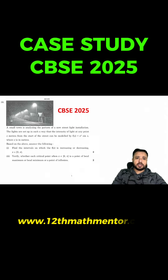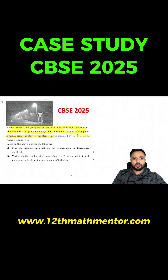Application of derivatives case study, CBSE 2025 Class 12. In this question, a small town is analyzing the pattern of a new street light installation. The lights are set up such that the intensity of light at any point x meters away from the start of the street can be modeled by f(x) = eˣ sin x, where x is in meters. Based on this, answer the following: find the interval for which f(x) is increasing or decreasing.